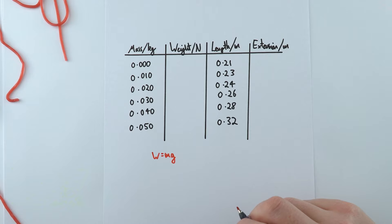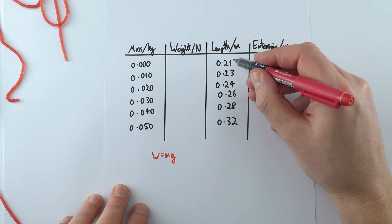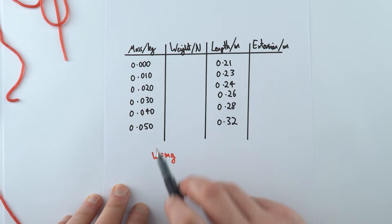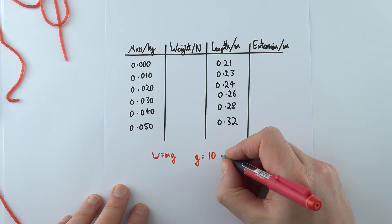Now this is the data that I took from the experiment measuring to the nearest centimetre when I looked at the length of that strawberry lace. Now to work out the force applied, it's going to be equal to the weight. And the weight is equal to the mass times the gravitational field strength. So here I'm going to use a value of 10 newtons per kilogram for the gravitational field strength.